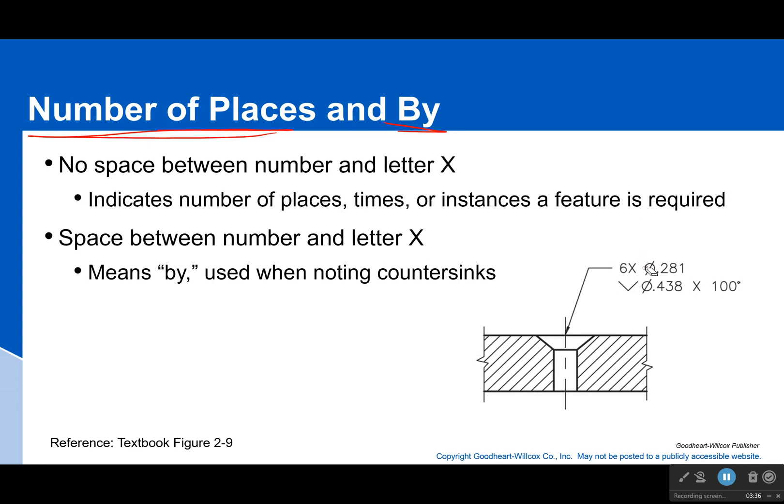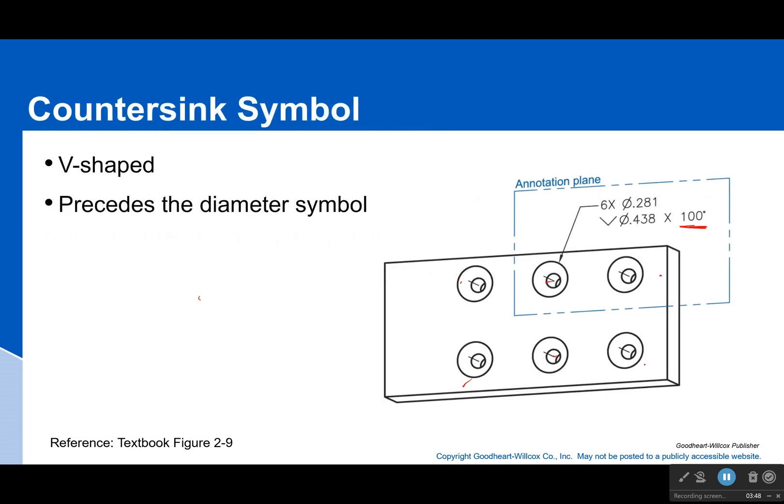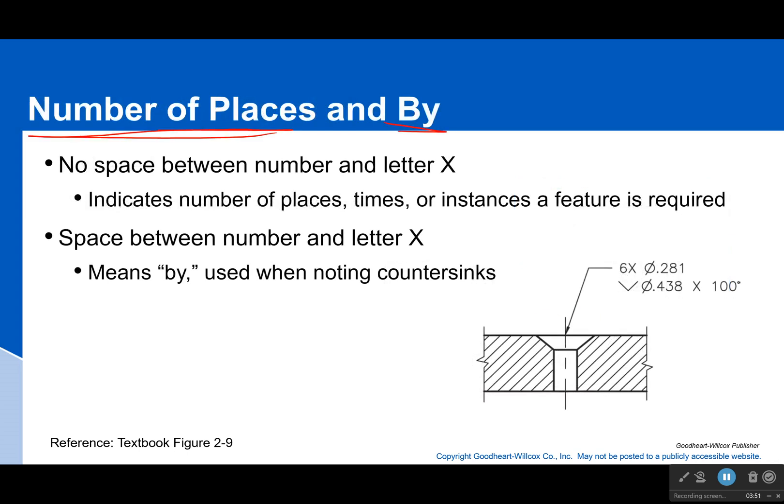The second X though has a space between the number and the X on both sides, and that means by, which is often used when noting countersinks. It tells you the diameter of the countersink, and then it tells you the angle of the countersink.